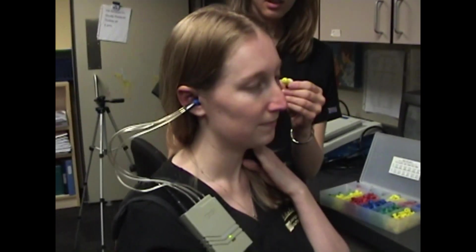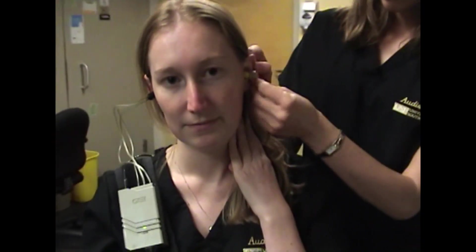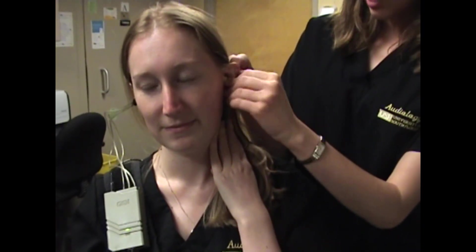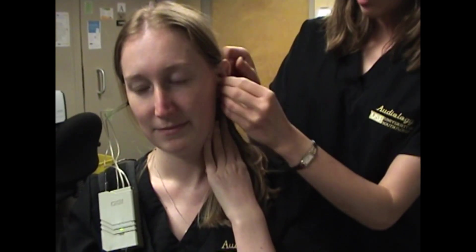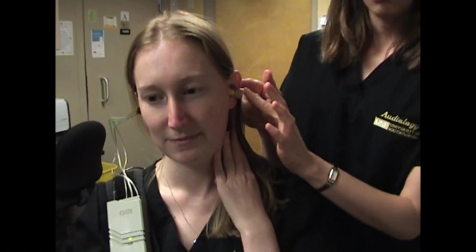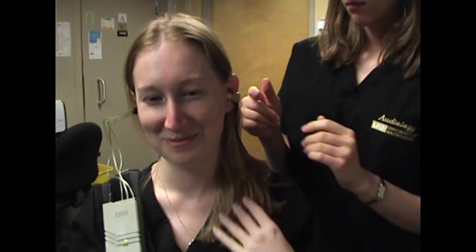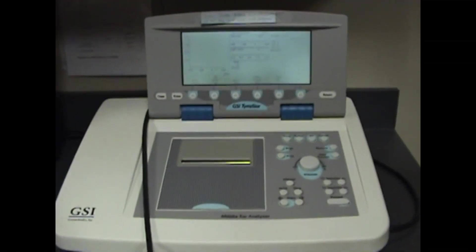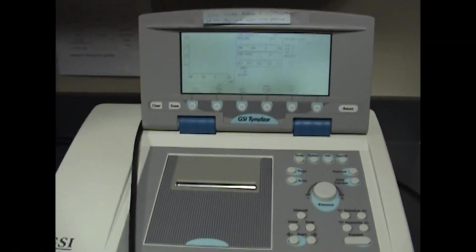We'll go ahead and place the contralateral tip. Again, pull back on the pinna. This one you won't achieve a seal like the other—it should just sort of fit in there, resting like an earbud.